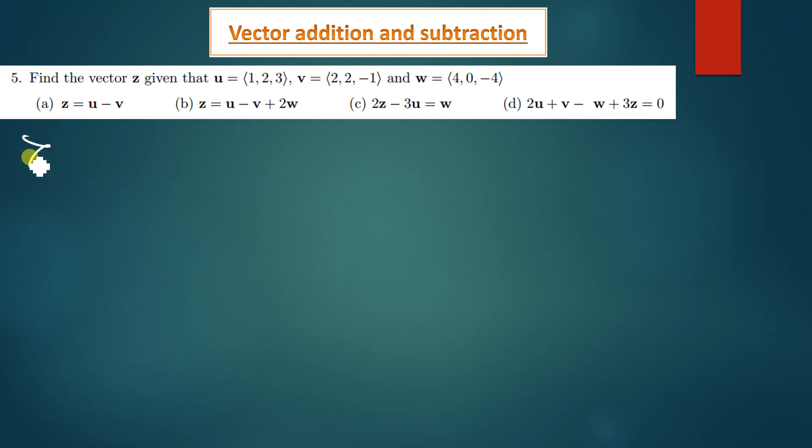Let's move on to part b. Part b is also asking us to find z and we have been given that z can be found by working out this operation which is u minus v plus 2w. So z is therefore going to be equal to u is 1, 2, 3, v is 2 comma 2 comma negative 1, and we have plus 2w. So 2w is we're just multiplying 2 times w which has been given to be 4 comma 0 comma negative 4.